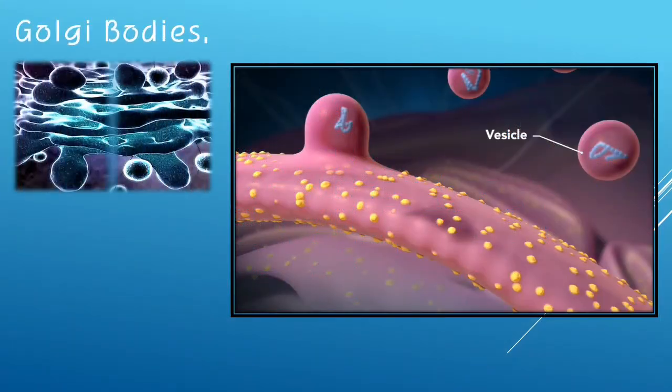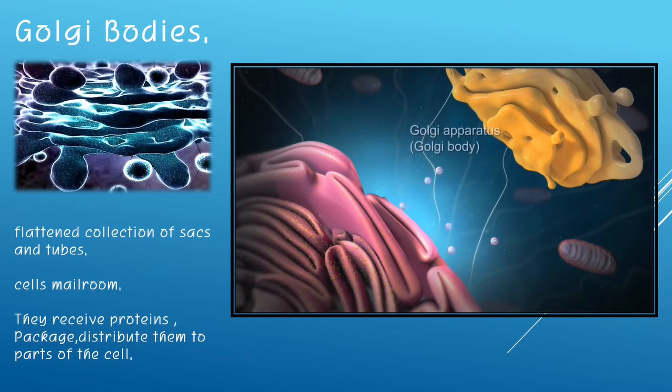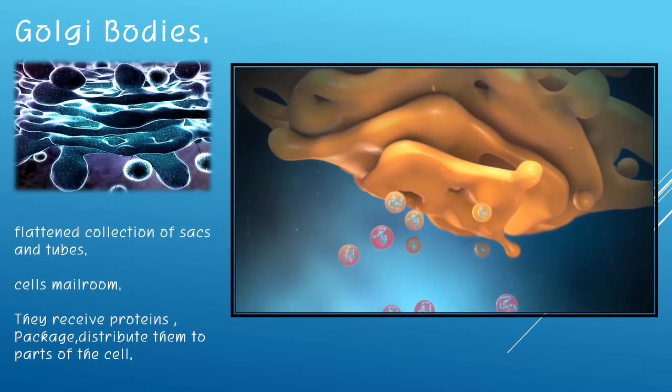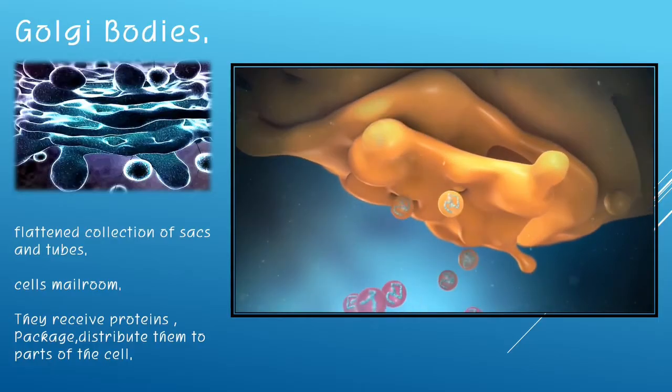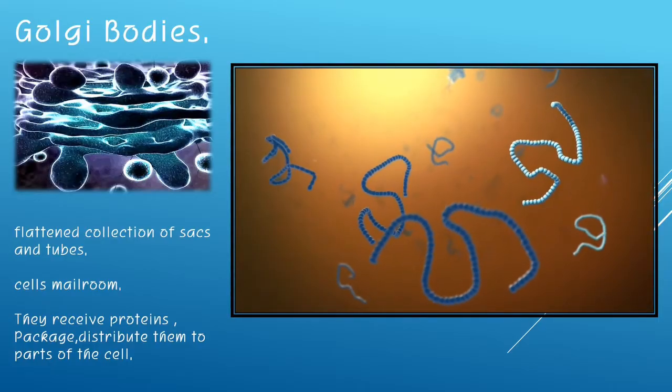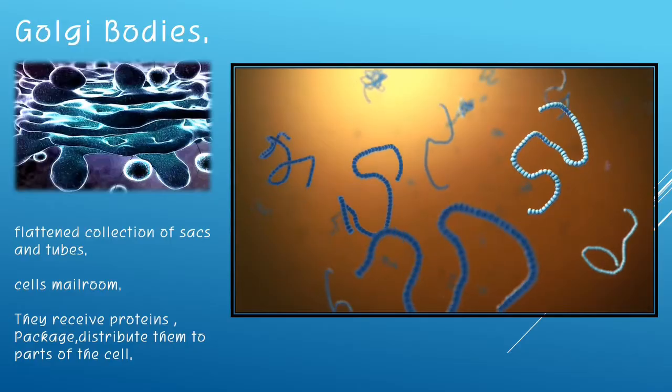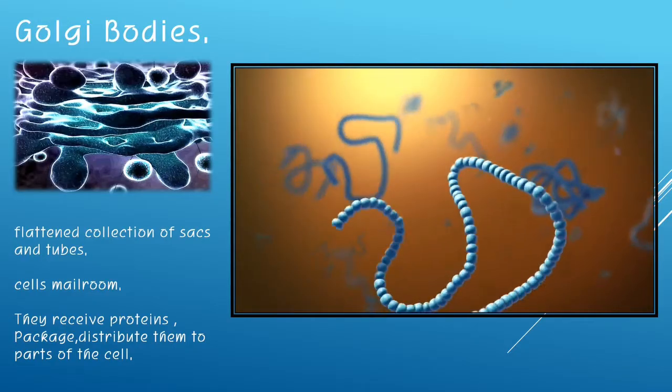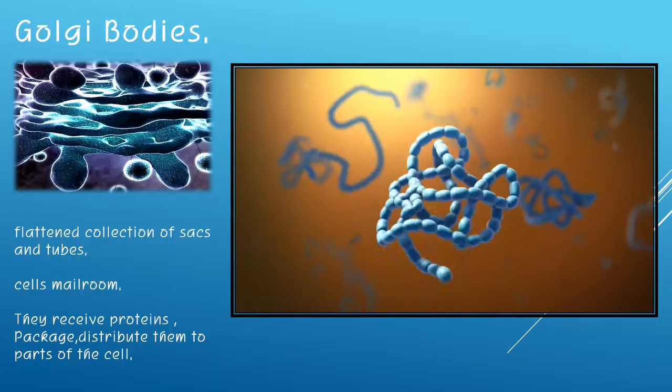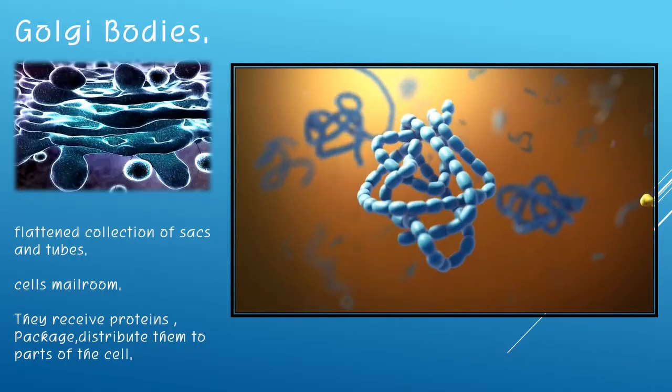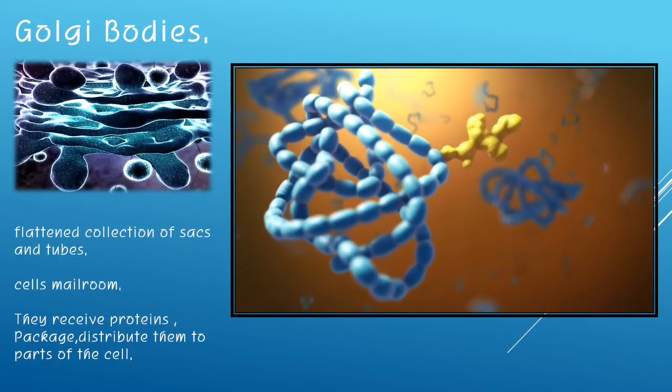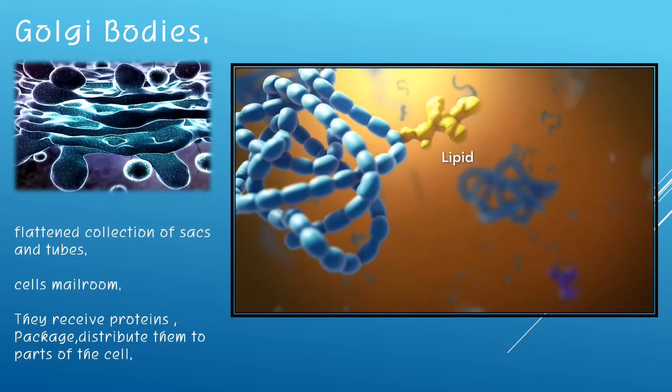The Golgi bodies. Within the endoplasmic reticulum, they appear as a flattened collection of sacs and tubes. Golgi bodies are known to be the cell's mailroom. They receive proteins, package it, and distribute them to every part of the cell.